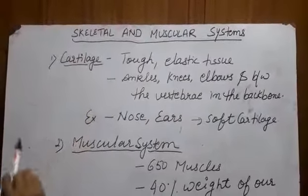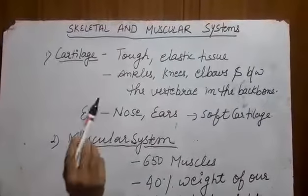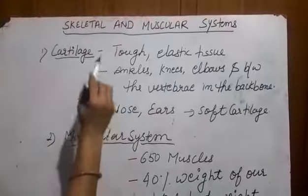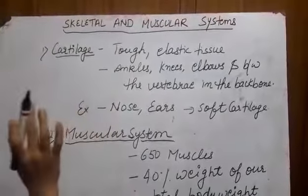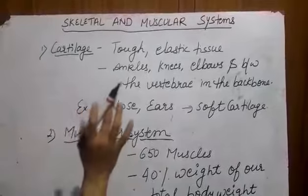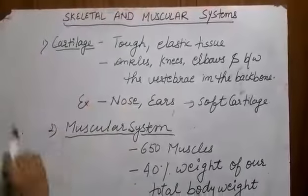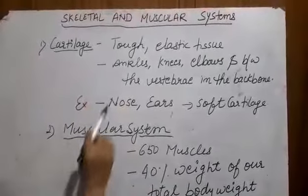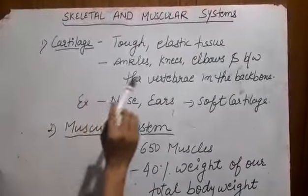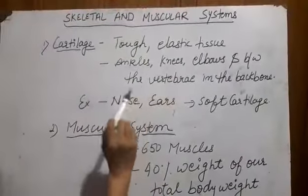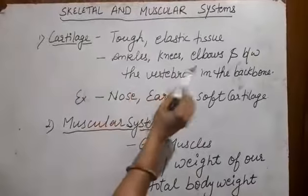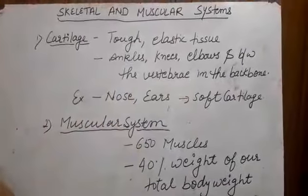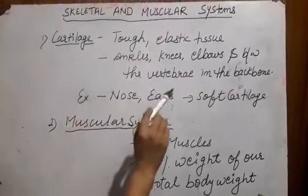Cartilage is a tough elastic tissue. Tough means it is a flexible tissue. It is present in the ankle, knee, elbow, and vertebrae.